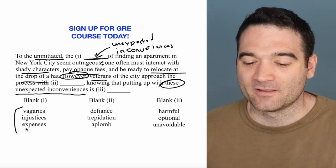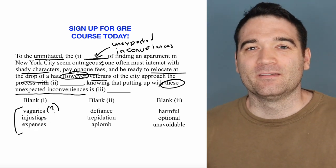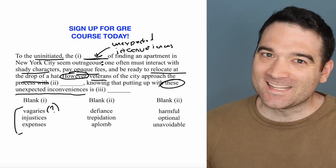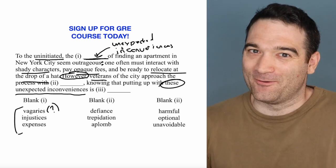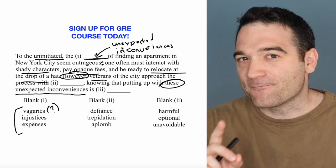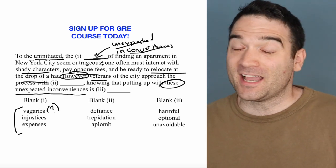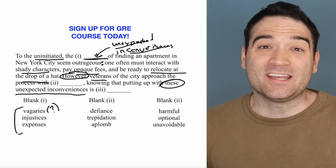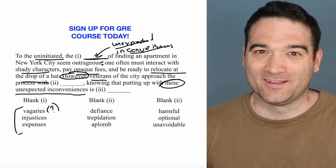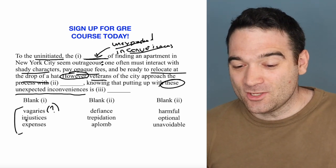Now let's look at the words we have here. 'Vagaries' — I don't know what that word means. 'Injustices' — I kind of like that one. But let's think about this: are these really injustices? Is that what we're describing? An injustice is something that's wrong. What we're talking about is how unexpected these things are — unexpected inconveniences. Unexpected inconveniences are not injustices, because injustice means you've been wronged somehow. So 'injustices' doesn't work.